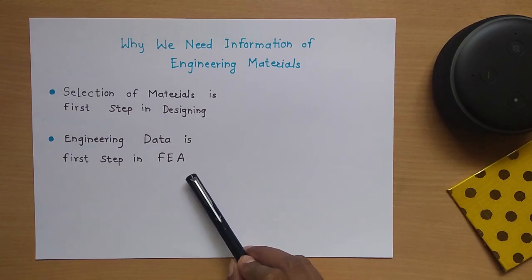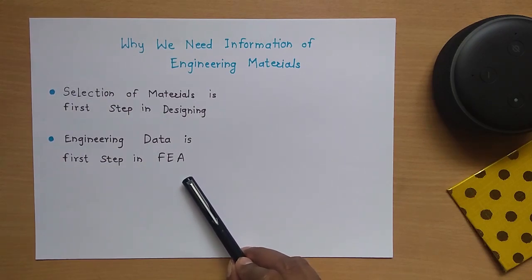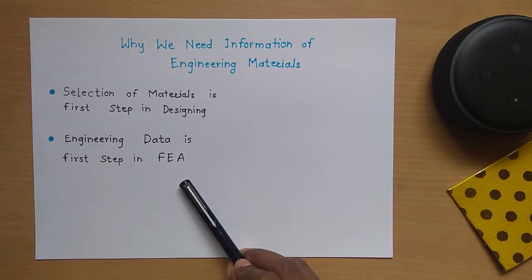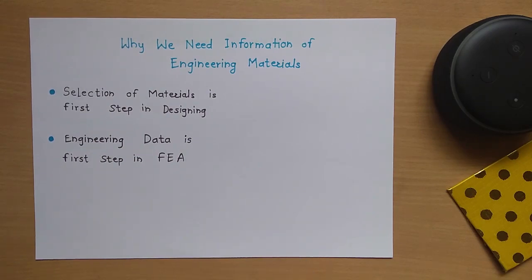In the second step, engineering data is the first step in FEA. If we are carrying out some FEA analysis using some software, we need to enter the data of the materials — that is, the engineering data.